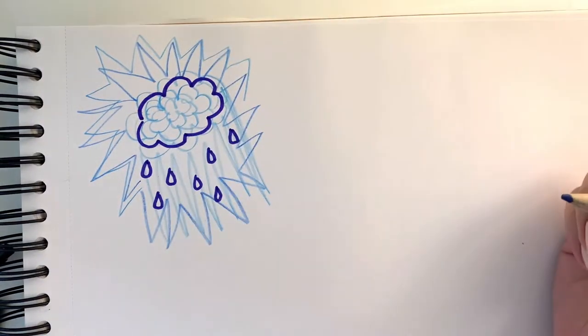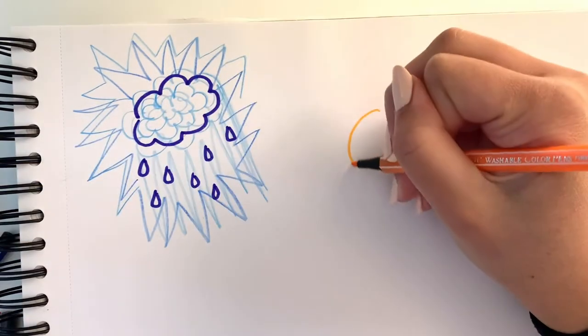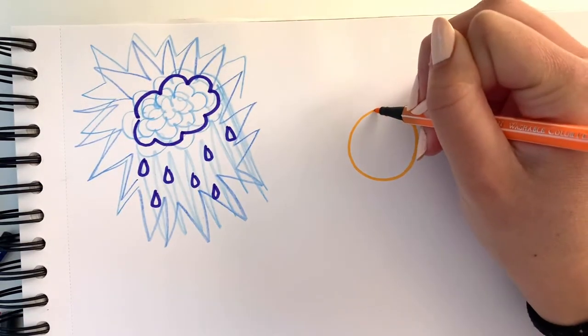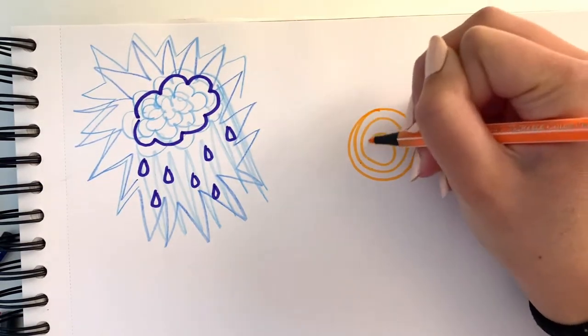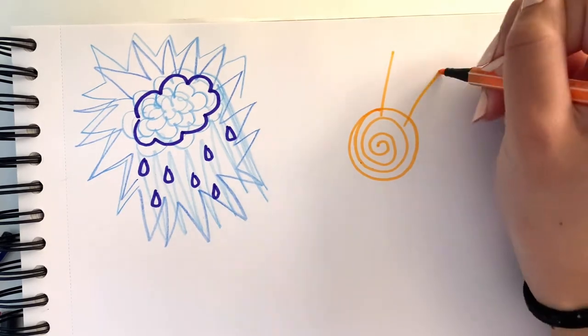As the songs transition from one another you can change your colors and your scribble design. I'm using some brighter colors, some orange and reds, and drawing a sun.